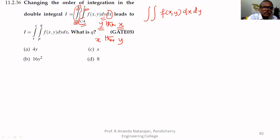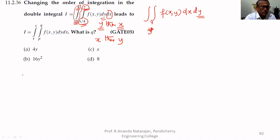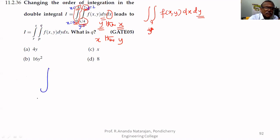The limits have to be changed. The limits have to be expressed in terms of y because we are doing y in the final integration. Taking the given limits: the given functions are y equal to x by 4 and y equal to 2. Also, x equal to 0 and x equal to 8. So the first integration goes from x equal to 0 to x equal to 8, and the inner integration goes from y equal to x by 4 to y equal to 2.